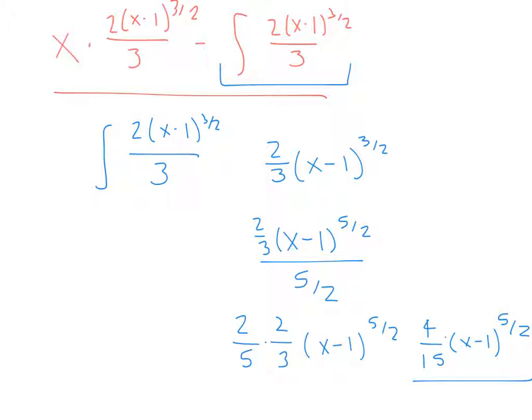And now that we have our answer to that integral, we can plug it back into our original equation from above right here, and we'll get our long answer via integration by parts. And we get x times 2, x minus 1, 3 halves over 3 minus 4 fifteenths x minus 1, 5 halves.